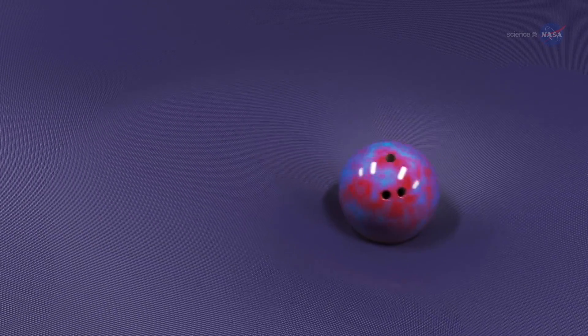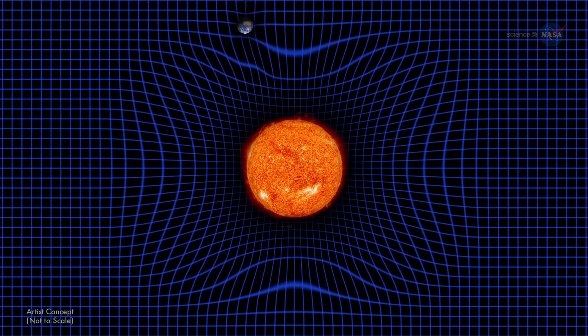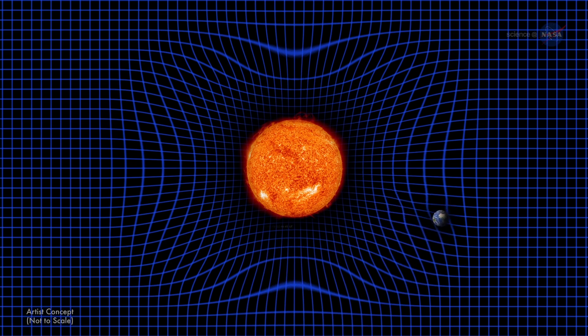Remember the physics analogy of the trampoline with a bowling ball in the middle? Like that ball, which gently distorts the trampoline's canvas, the Sun warps the smooth canvas of spacetime, enough to make planets move in curved orbits.